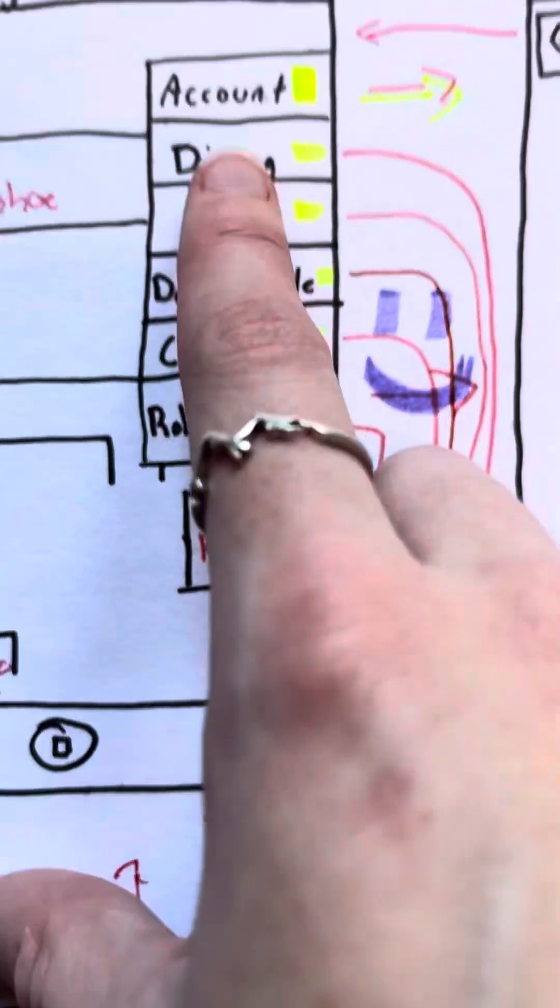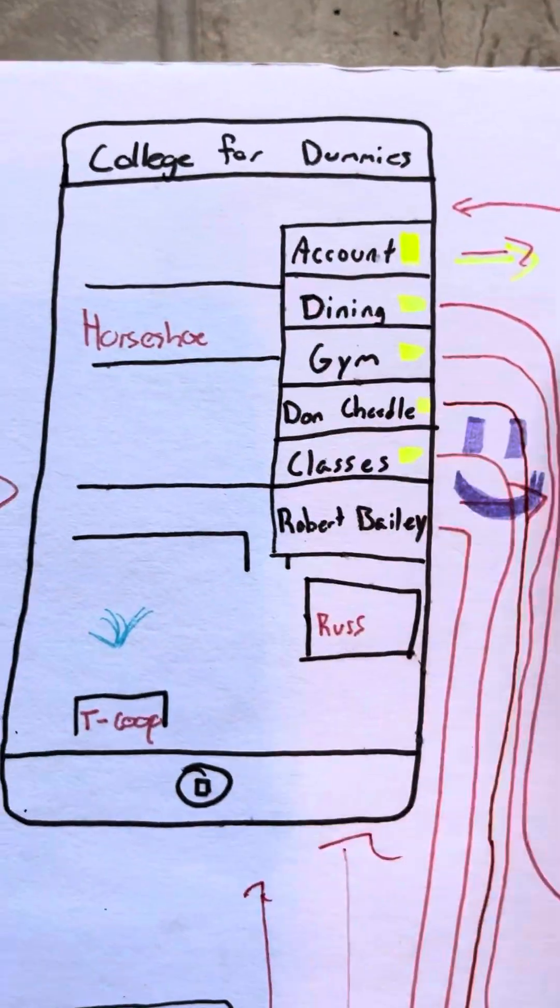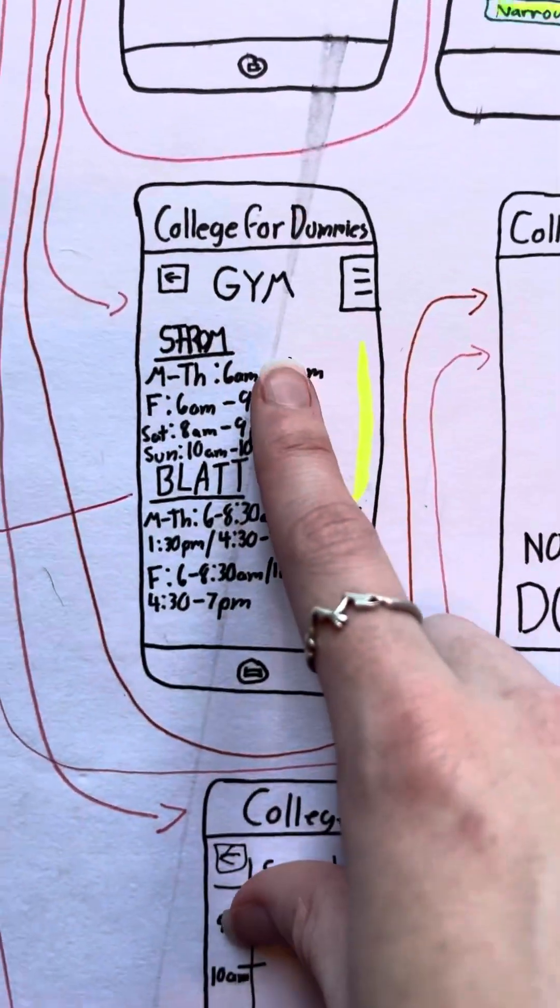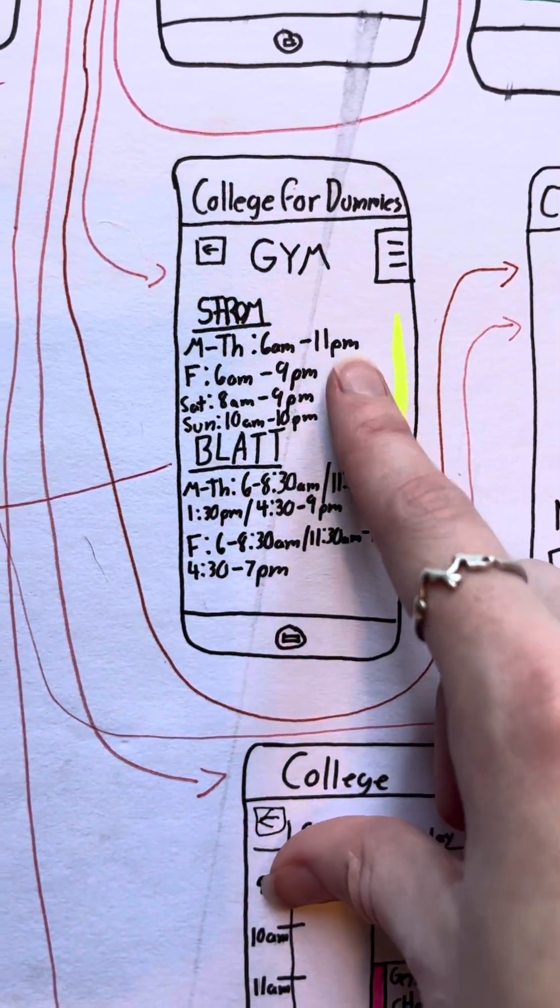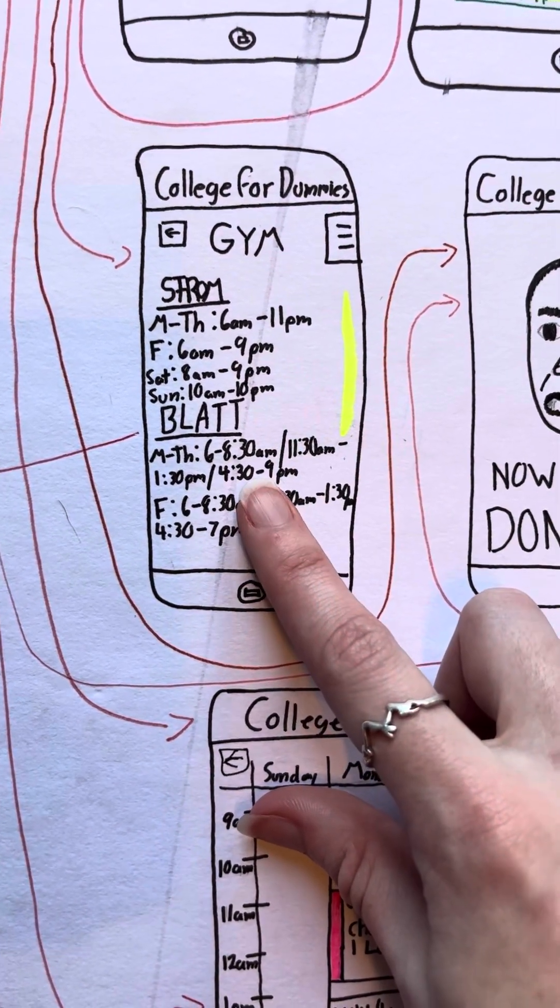Then we go back here, and let's say we want to go to the gym. From the gym, we go down, and it shows us immediately the times that they're open, because especially for Blatt, that can be confusing.